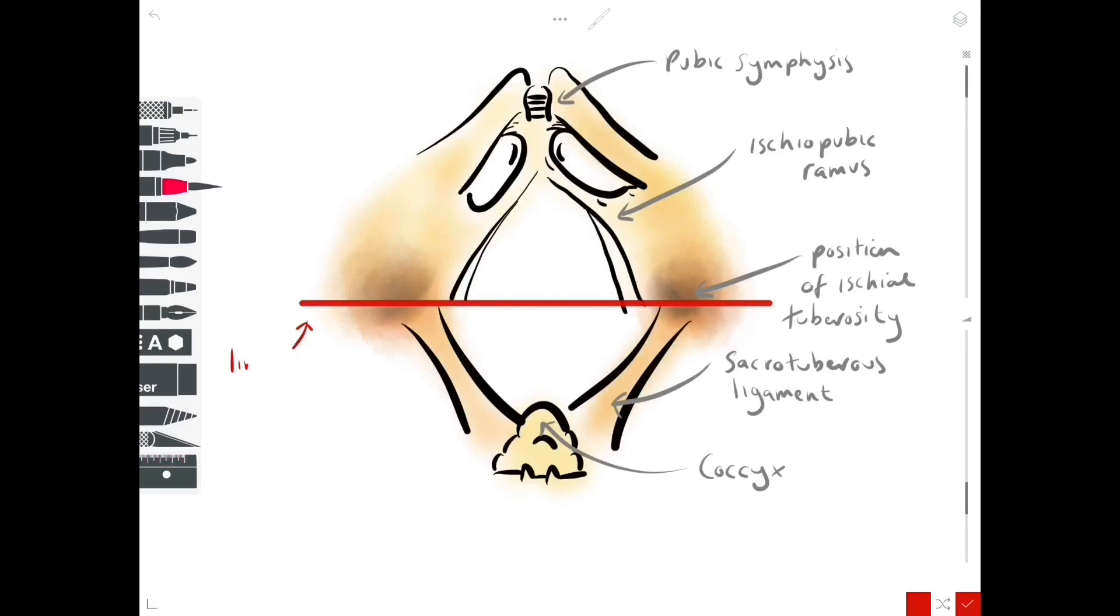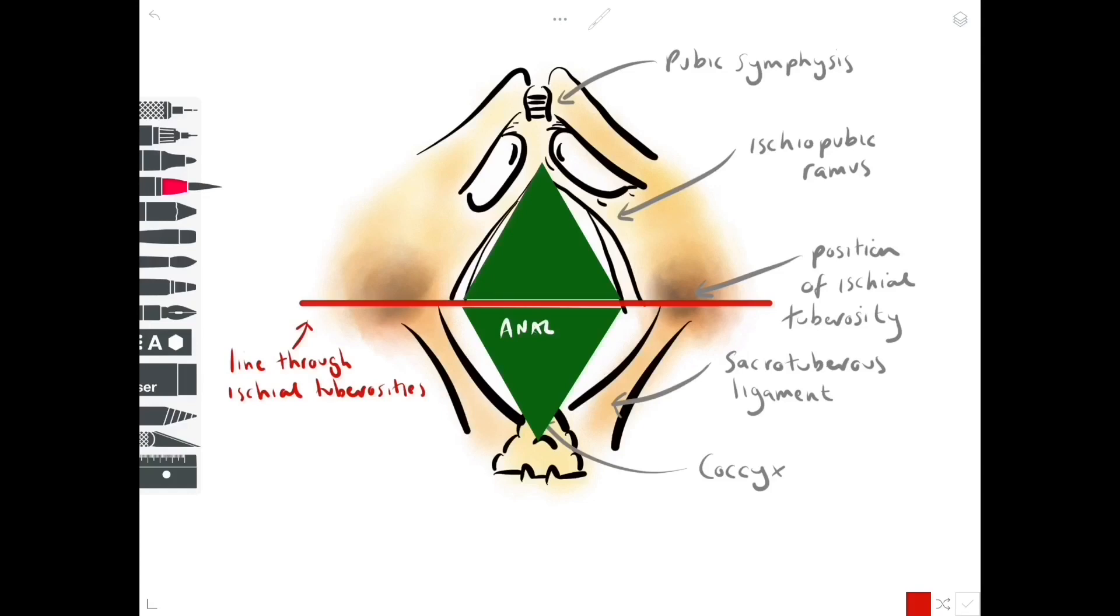Let's deal with the posterior triangle first. We're not going to dwell on that today. It's called the anal triangle. It contains an opening for the anus, the anal aperture, and is surrounded by an external anal sphincter. Either side of the anal opening are two gutter or wedge-shaped spaces called the ischial anal fossae, and they contain fat.